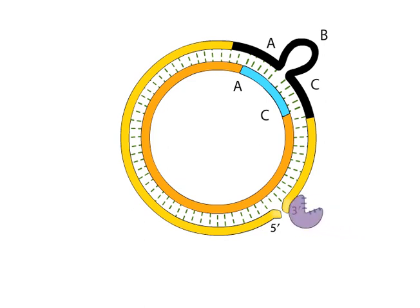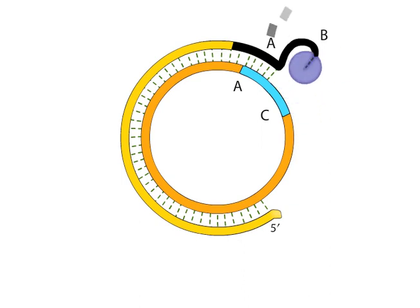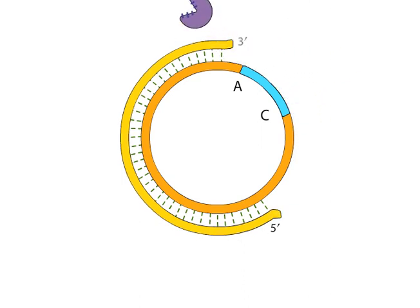Next, exonuclease 3 is used to progressively chew up the 3' end of the nicked DNA strand. The sample is incubated for sufficient time so that segment B from the template strand is removed.